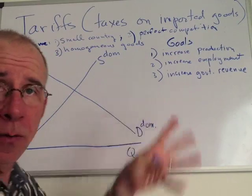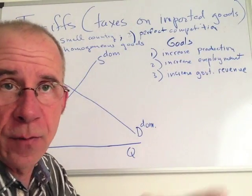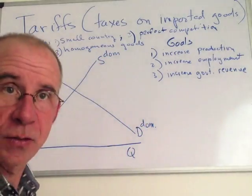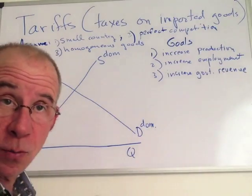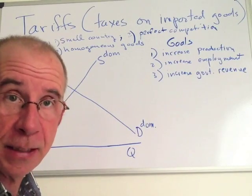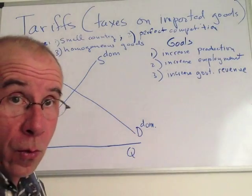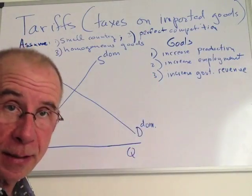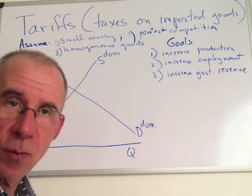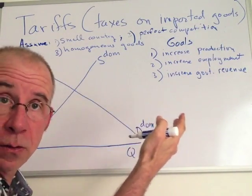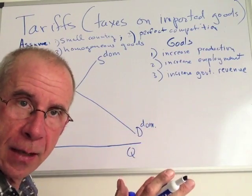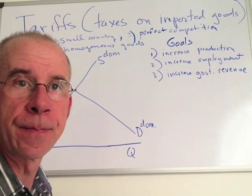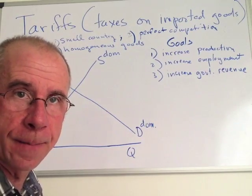In general, there are many instances where governments might want to have a tariff for various reasons, but I want to think about three clear reasons. One, it might want to increase production inside the domestic industry. In a very much related goal, it might want to increase employment in that industry, and also may want to increase government revenue — this is, after all, a tax. So we want to take a look at whether or not the government can reach these goals, and at what costs. That second part is where economic analysis is really going to be helpful.